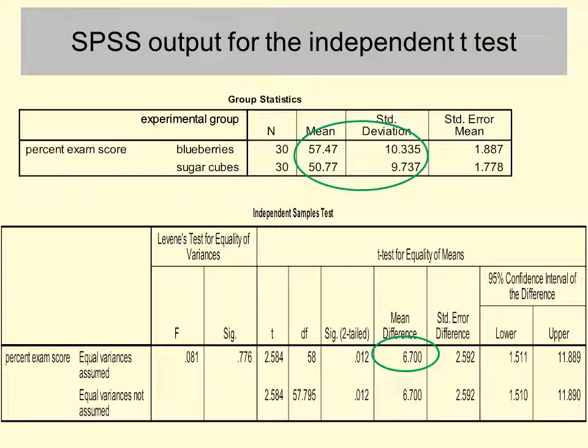Let's look at the SPSS output for the independent samples t-test. The green circle in the top part of this slide highlights where you get the means and standard deviations for each experimental condition. The green circle in the bottom part highlights where the mean difference comes from, which I included in the paragraph. You could calculate the mean difference yourself by subtracting one condition mean from the other, but SPSS has done it for you.